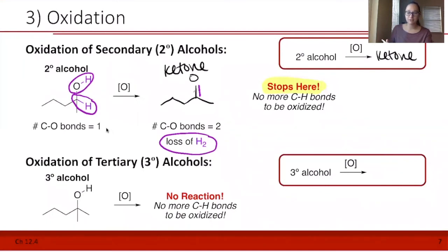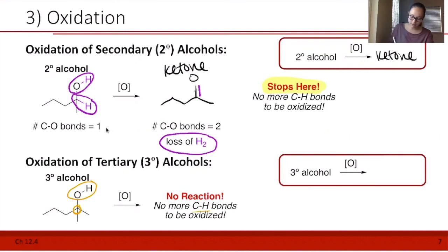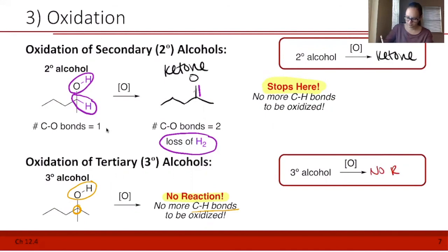Our last case is the oxidation of tertiary alcohols. In a tertiary alcohol, we do have an OH bond and we could lose that hydrogen, but on this carbon there are no CH bonds to be oxidized at all. So in this case, we have no reaction — a tertiary alcohol will not be oxidized because there are no CH bonds to be oxidized. That is the overview of oxidation reactions, and we'll do a little bit of practice in our next video.